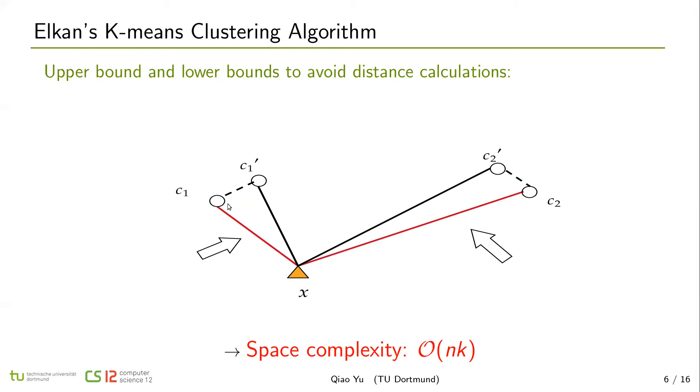we use x c1 plus c1 c1' as the upper bound of x c1' and x c2 minus c2 to c2' as the lower bound of x c2'. If the lower bound is larger than the upper bound, we know that x c2' is larger than x c1'. So by these bounds, we don't need to really calculate distances x c1' and x c2'.